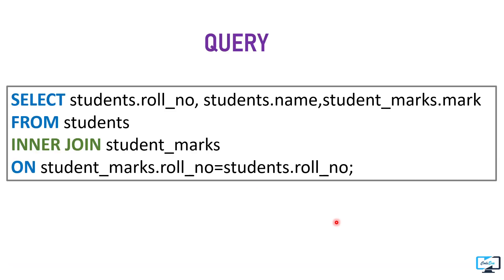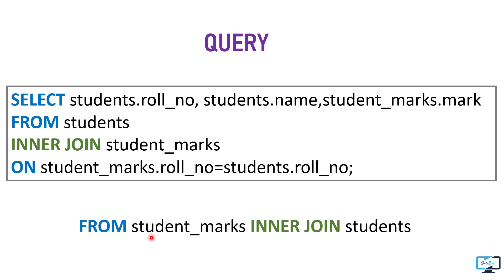The query for inner join: first we specify which fields we need and from which table. Here we write SELECT student.role_number - that means we need the role number column from the student table - likewise name, and marks column from the student marks table. Then we specify the table names: FROM students INNER JOIN student_marks.